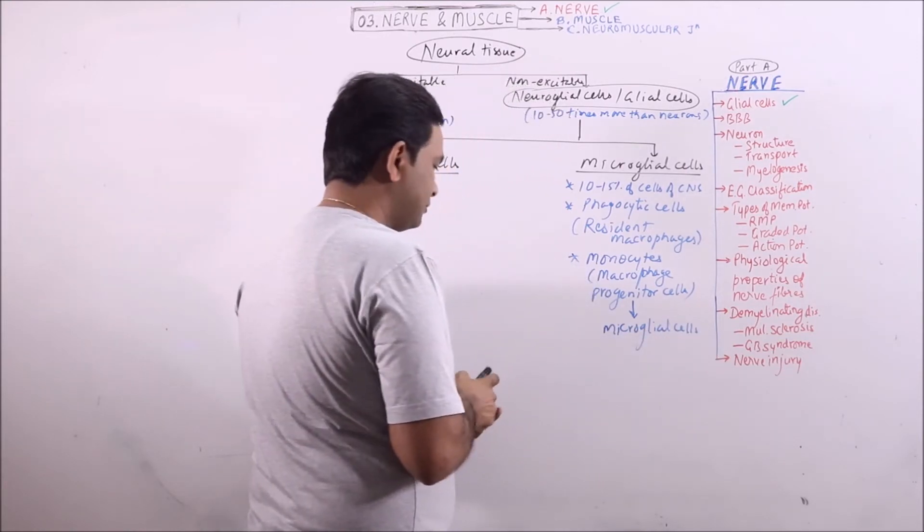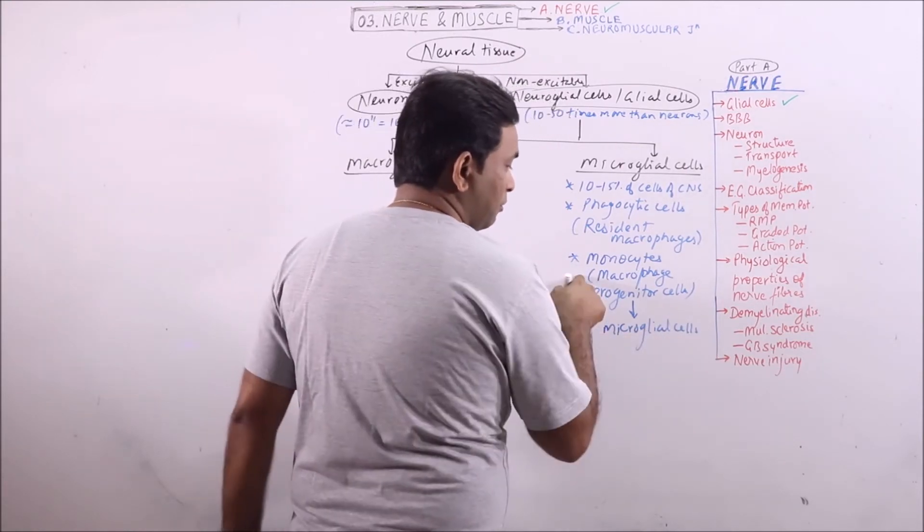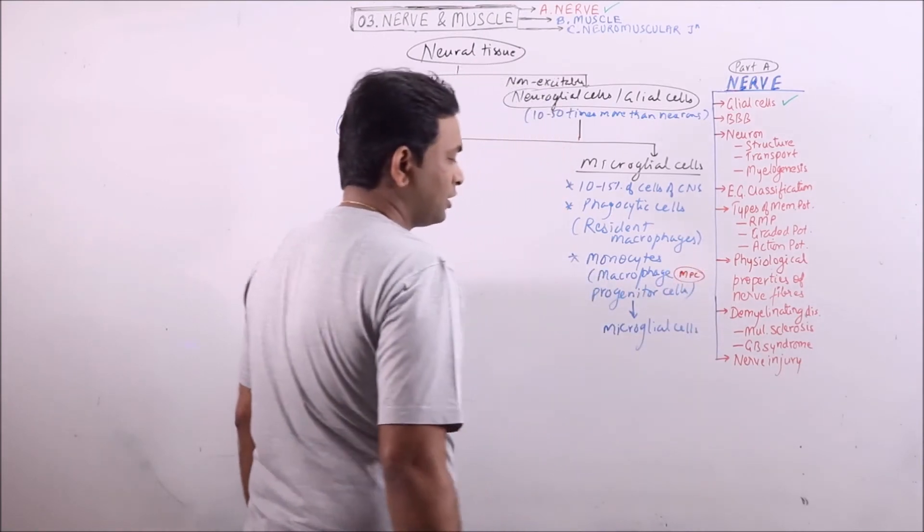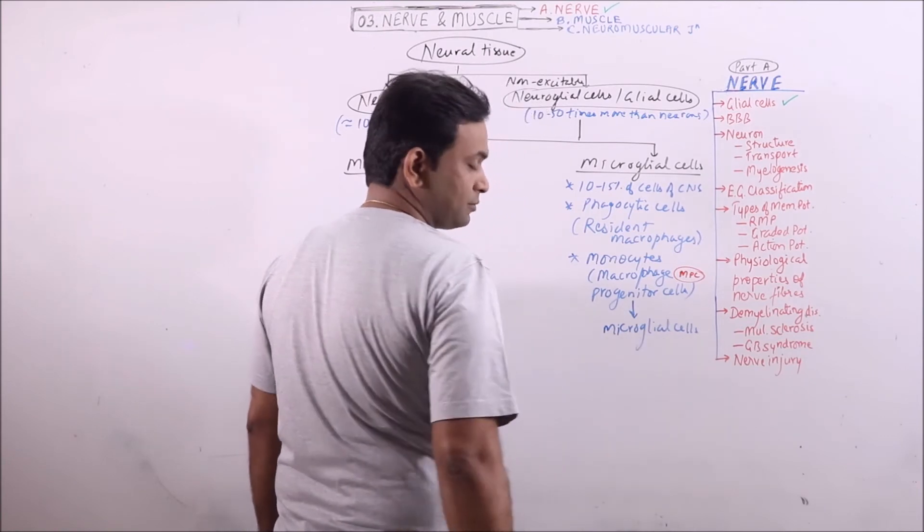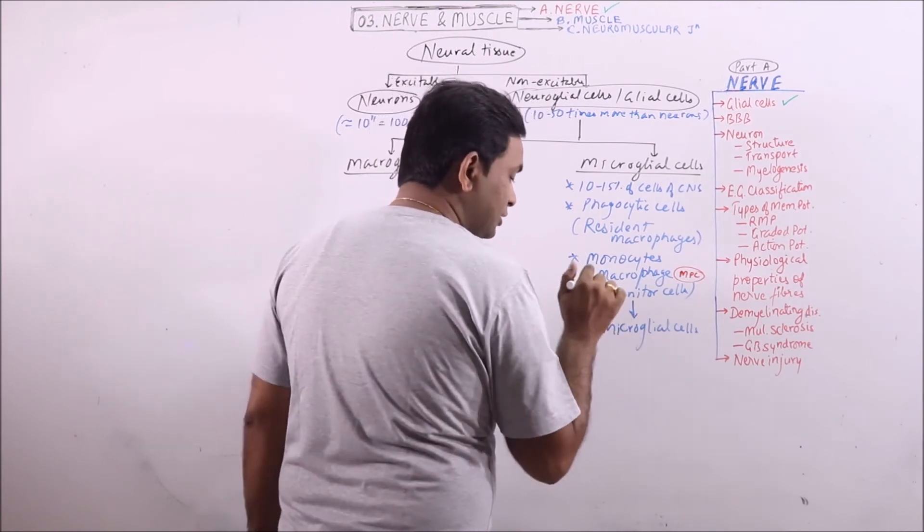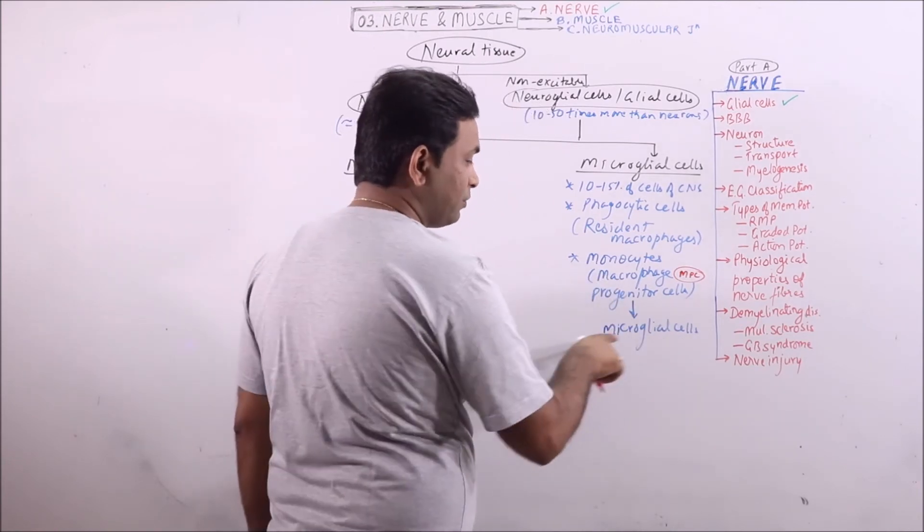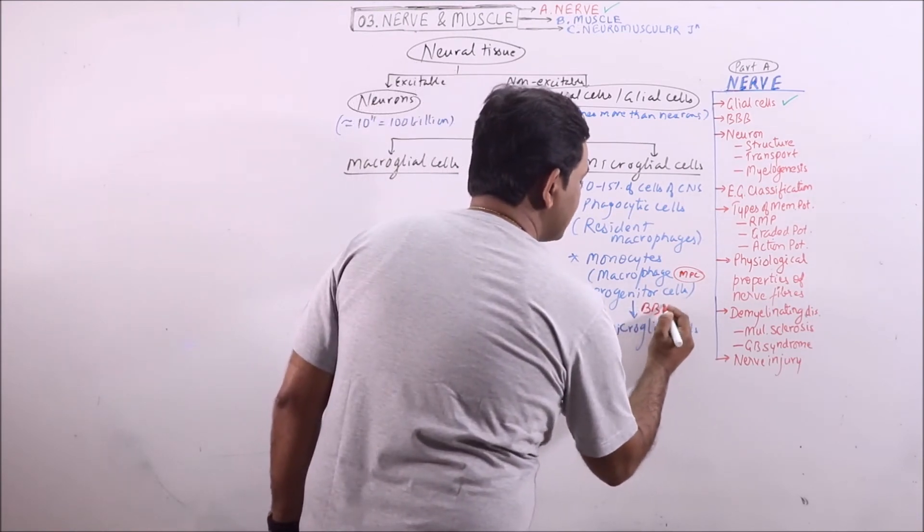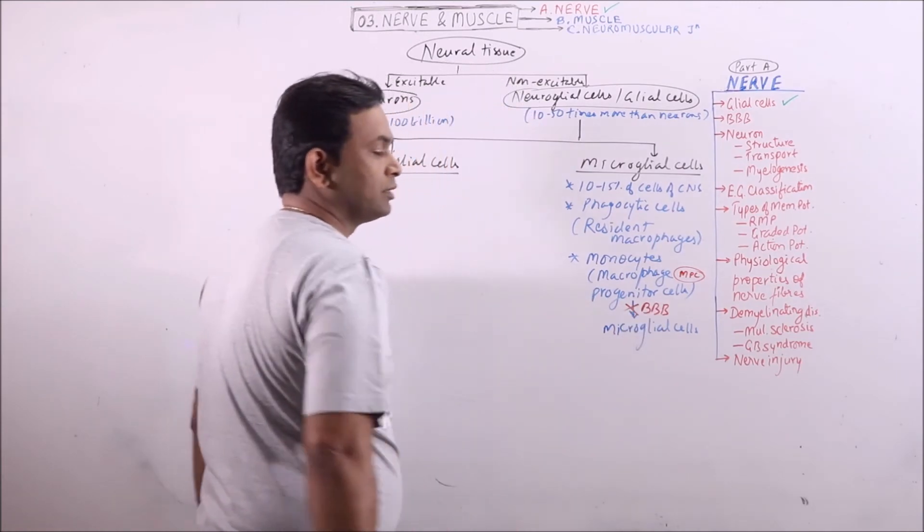But we know that if macrophage progenitor cells or MPCs have to form the microglial cells, then this rate should be very high to replace these microglial cells in CNS, and in presence of blood brain barrier it is not possible.